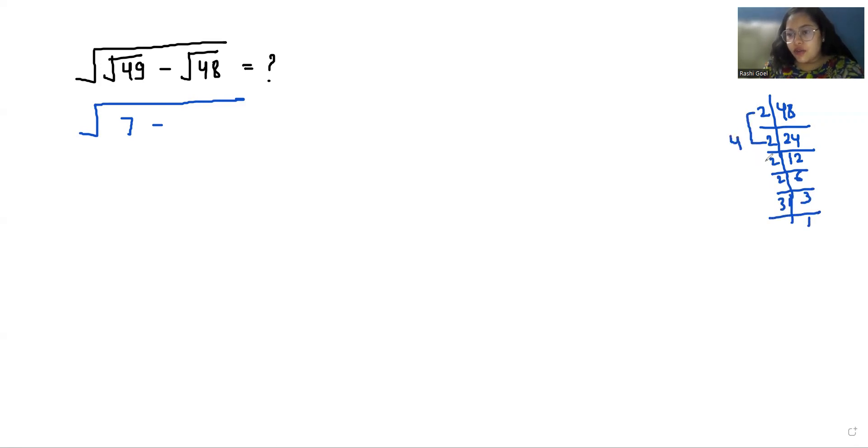This becomes 4, 4 and 3. Under square root, 4 comes outside because it's a pair, so it becomes 4√3.